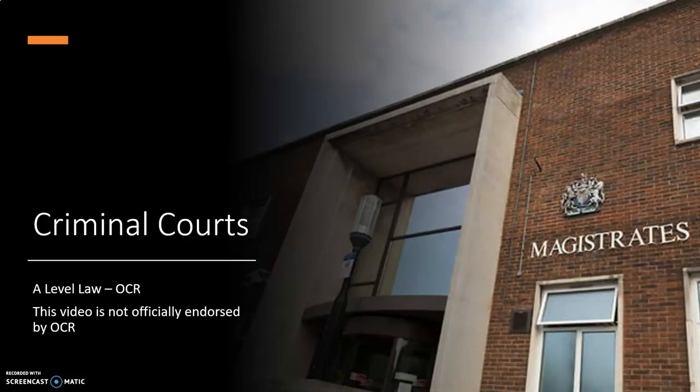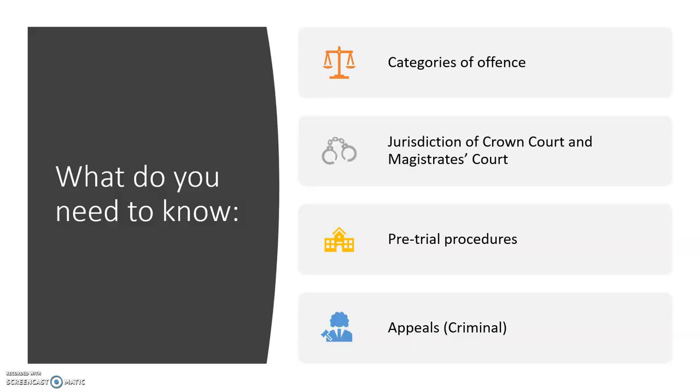What do you need to know for criminal courts? The following: categories of offence, jurisdiction of Crown Court and Magistrates' Court, pre-trial procedures, and criminal appeals.